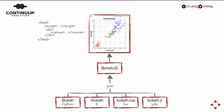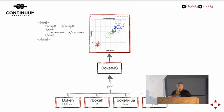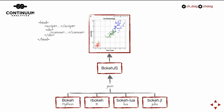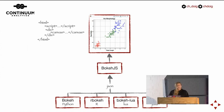Bokeh is an interactive visualization library written in several languages. The important part, comparing it to other visualization libraries in the ecosystem, is that it targets the browser and being able to deploy and share visualizations in a browser setting. In order to do that, there's BokehJS, which is a JavaScript library that, given a blob of JSON, is able to render a visualization.